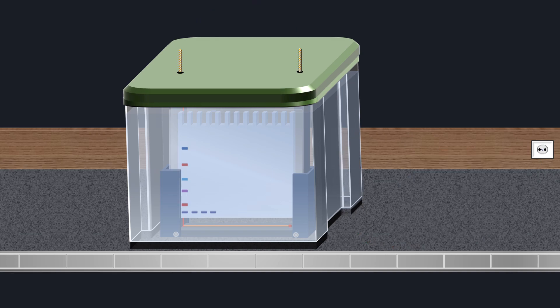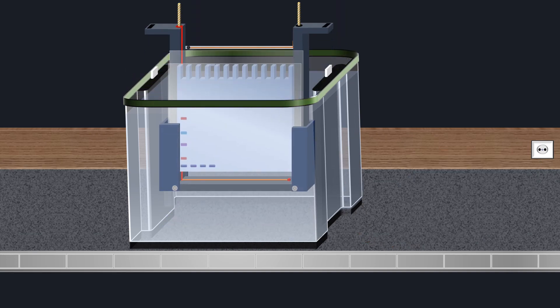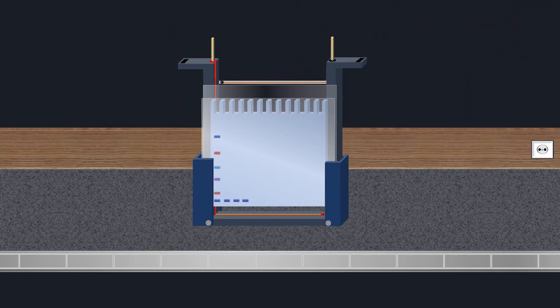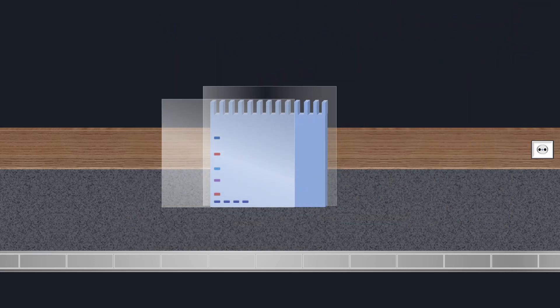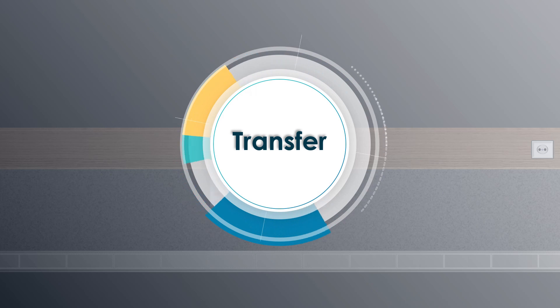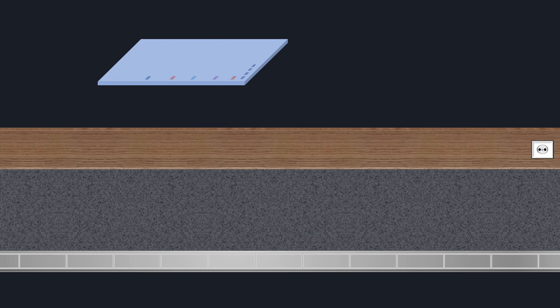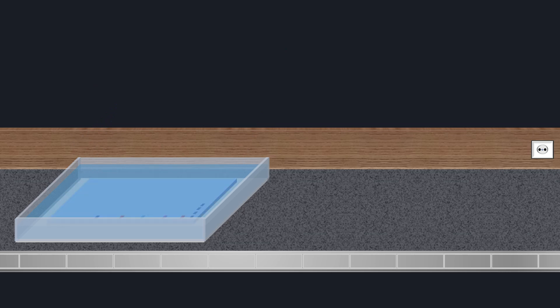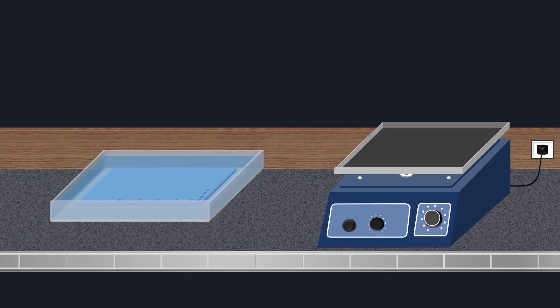Once the proteins are separated, the gel cassette is removed from the electrophoresis tank. Next, the glass plates are removed, and the top portion containing the wells is cut off from the gel. In the next step, the separated proteins will be transferred from inside the gel to an appropriate membrane. When performing a wet transfer, the gel is first equilibrated in transfer buffer by placing it in a tray with the blotting buffer on a rocking platform.